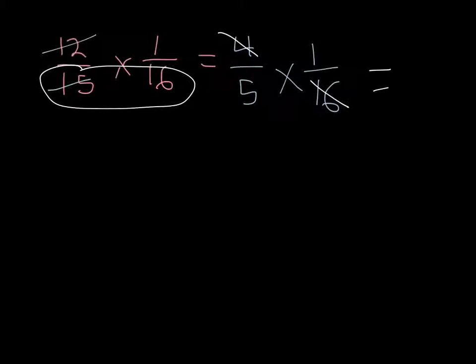4 divided by 4, remember, is 1. So now I have 1 fifth. And I'll write my times sign again. 16 divided by 4 is 4. And I have 1 fourth.